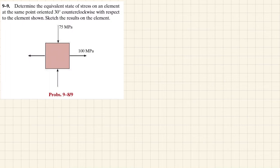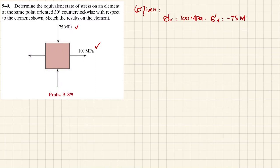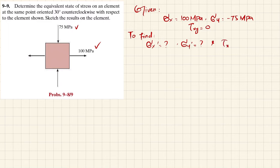Let's start with the given data. We have sigma x equal to 100 MPa, sigma y equal to minus 75 MPa (compressive), and tau xy equal to 0 because there is no shear stress. What we have to find are the transformed stresses: sigma x dash, sigma y dash, and tau x dash y dash, when theta is 30 degrees counterclockwise.